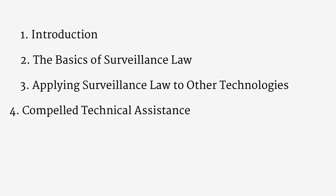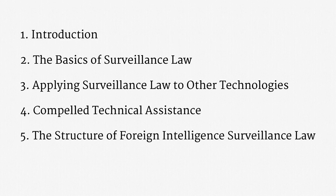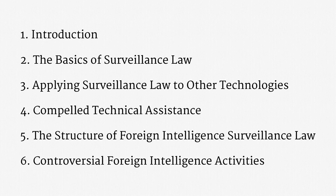The fourth unit addresses compelled technical assistance — that is, what sorts of help the government can require. We will talk through when businesses have to provide backdoors in their systems, as well as when you have to decrypt your data. In the fifth unit, we shift from law enforcement to foreign intelligence, discussing additional building blocks and comparing the two bodies of law. The sixth and last unit covers controversial foreign intelligence activities, including bulk phone metadata collection and the PRISM program, examining both the technical structure and the legal underpinnings of these activities.